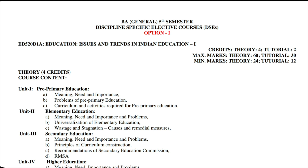The title of Option 1 is Issues and Trends in Contemporary Indian Education. The code for this is ED520D1A. You have six credits for theory and tutorial. Maximum marks for theory portion are 60, minimum marks 24. Maximum marks for tutorial are 30, minimum marks 12.